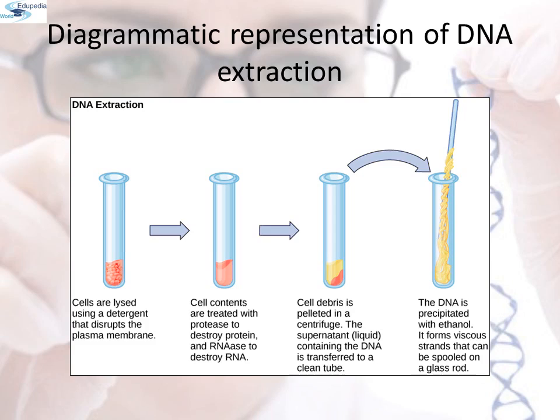This is the diagrammatic representation of DNA extraction. The cells are lysed using detergents that disrupt the plasma membrane. The cell contents are then treated with proteases to destroy protein and RNases to destroy RNA. The cell debris is pelleted in a centrifuge. The supernatant containing the DNA is transferred to a clean tube, and the DNA is precipitated with ethanol. It forms viscous strands that can be spooled on a glass rod.